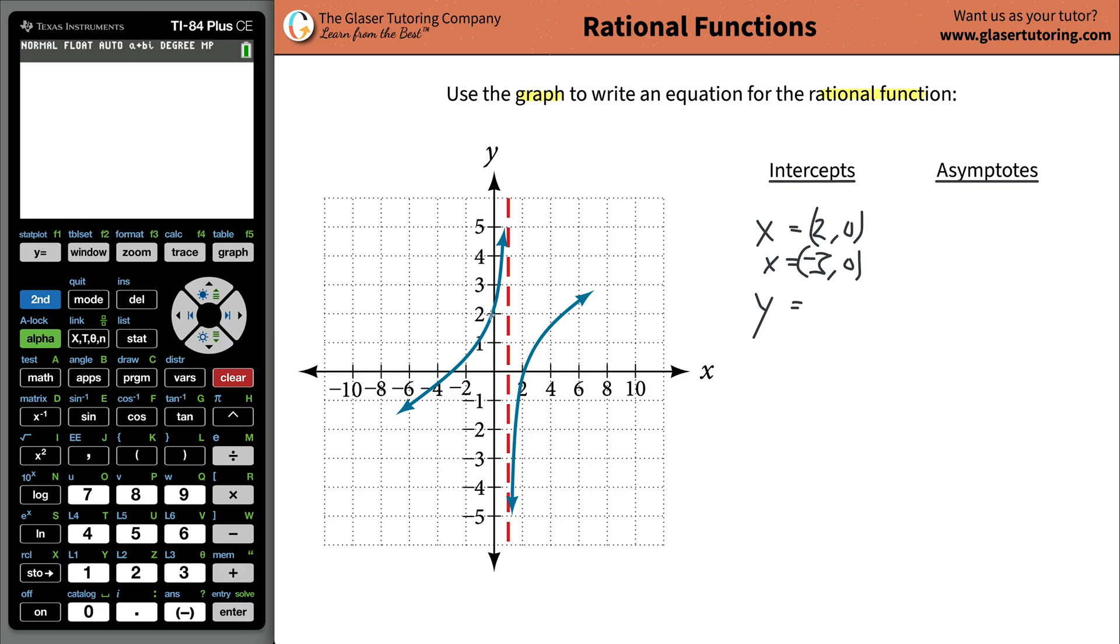Next is the Y intercept. The function only crossed the Y axis in one spot, and it's going to be at two. So that's the Y intercept. We can label that as zero comma two.